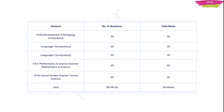Let me make things clearer. In paper 2, child development and pedagogy has 30 questions and 30 marks. Language 1 has 30 questions and 30 marks. Language 2 has 30 questions and 30 marks. These three — child development and pedagogy, first language and second language — are compulsory papers for everyone. Mathematics will be 30 marks and science will be 30 marks, for maths and science teachers. The social studies syllabus will be 60 marks with 60 questions, for social studies teachers.